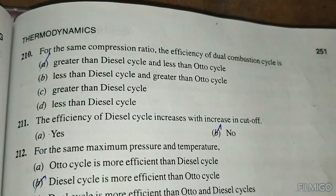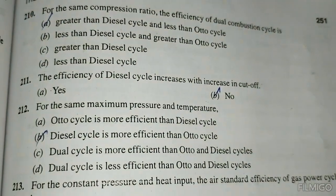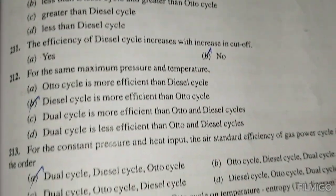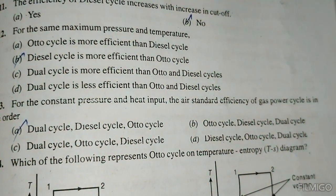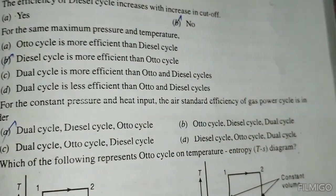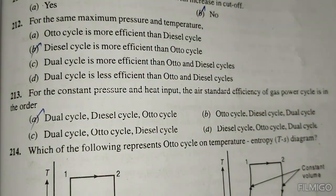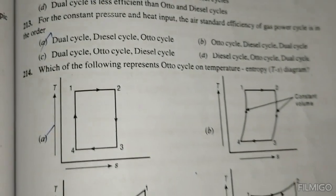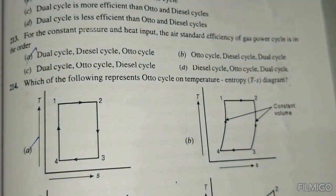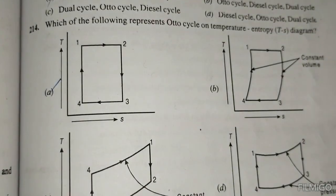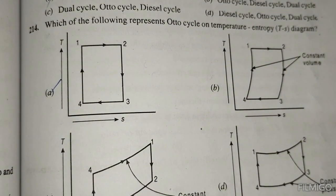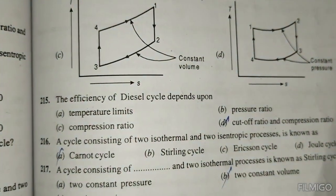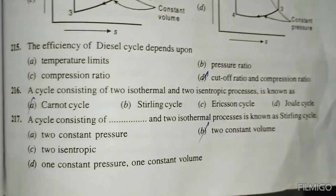The efficiency of the Diesel cycle increases with increasing cut-off — this is no. For the same maximum pressure and temperature, the Diesel cycle is more efficient than the Otto cycle. For constant pressure and heat input, the air standard efficiency of gas power cycles ranks: Otto cycle, then Diesel cycle. The T-S diagram for the Otto cycle is represented as T-S-1-2-3-4. The efficiency of the Diesel cycle depends upon cut-off ratio and compression ratio.